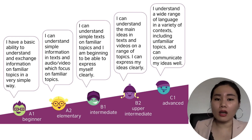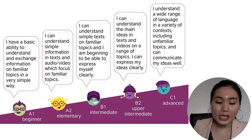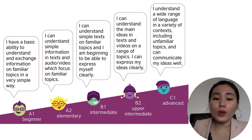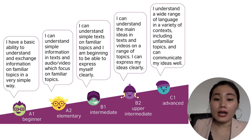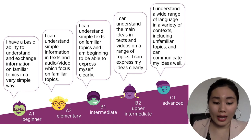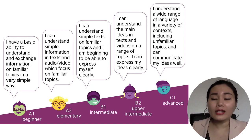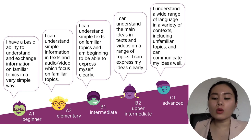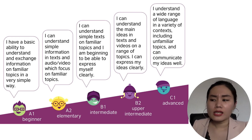Ví dụ A1 ở đây người ta nói là 'I have a basic ability to understand and exchange information on familiar topics in a very simple way.' Tức là bạn có một cái khả năng để hiểu cũng như là trao đổi thông tin về các chủ đề thân thuộc hàng ngày bằng một cách đơn giản — đó là cái sự thành thạo trong trình độ A1. Còn nếu bạn chỉ nói là 'mục tiêu của tôi là nói tiếng Anh thành thạo' thôi thì rất là khó để biết như thế nào gọi là thành thạo.